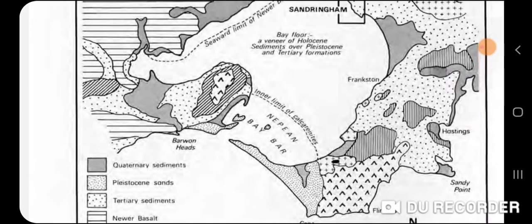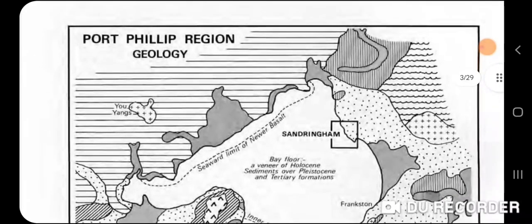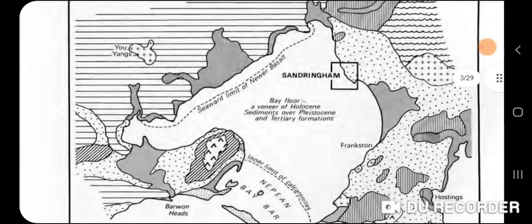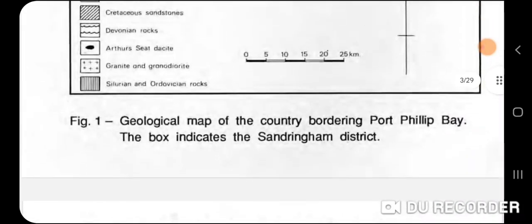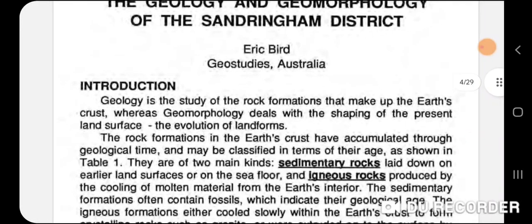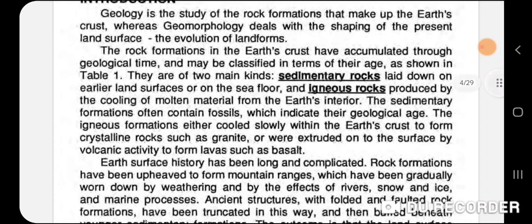Surrounding it we have Cretaceous sandstone and quaternary deposits — probably dune deposits and alluvial material. It's all pretty flat around there. Where we were today is underneath the newer volcanics, and that's an interesting map to look at if you have time.